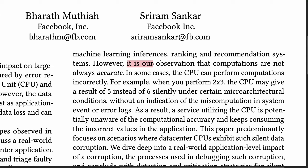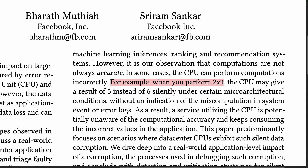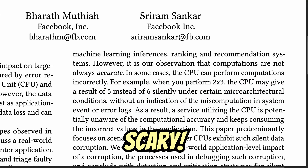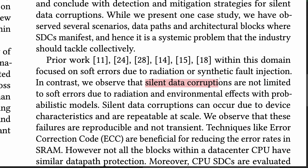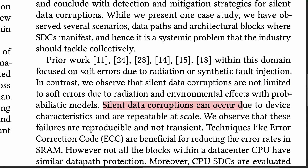The authors say it is their observation that computations are not always accurate — in some cases the CPU can perform computations incorrectly. For example, when you perform 2×3, the CPU may give a result of 5 instead of 6, silently, under certain micro-architectural conditions, without any indication in system event or error logs. Scary. Silent data corruptions are not limited to soft errors due to radiation and environmental effects like those cosmic rays; they can also occur due to device characteristics and are repeatable at scale.